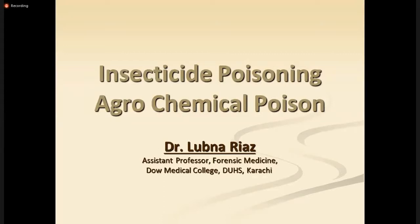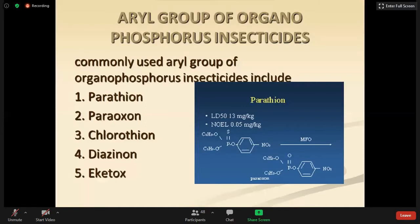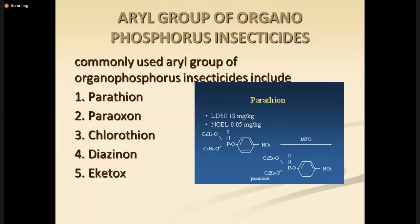Some examples include methylparathion and diazinon, which is also known as TIK20 (T-I-K-N20), as well as enterox and peroxone. These are some examples you just have to memorize a few, so you know what are the alkyl and the aryl groups.